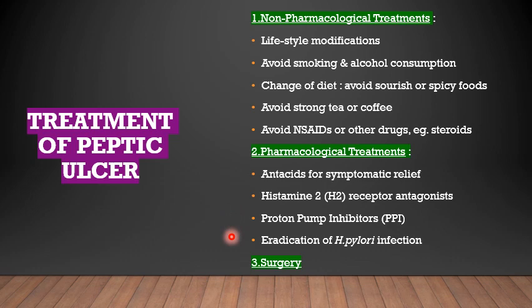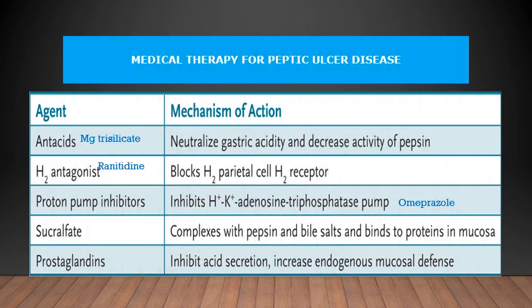The other important pharmacological treatment is eradication of H. pylori infection. As 90% of patients with duodenal ulcer and 70% of patients with gastric ulcer are H. pylori positive, eradication of these bacteria will drastically reduce the incidence of these ulcers. Other drugs used include antacids, H2 antagonists, proton pump inhibitors, sucralfate, mucosal protective agents, cytoprotective agents which protect the mucosa of the stomach and duodenum, and prostaglandins which inhibit secretion and increase endogenous mucosal defense.